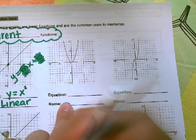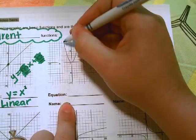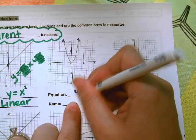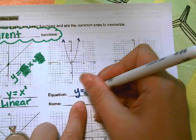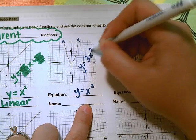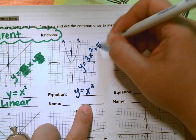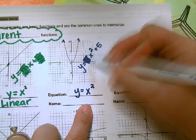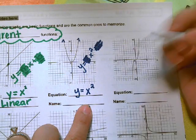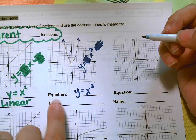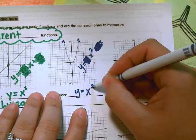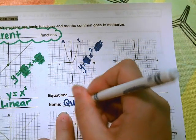This graph right here is not a line — it makes the shape of a parabola. When the highest exponent is a 2, it's in the form y equals x squared. It could have a number in front or a number added, but a parent function doesn't have any of those. It's just basic: y equals x squared. We call this a quadratic function.